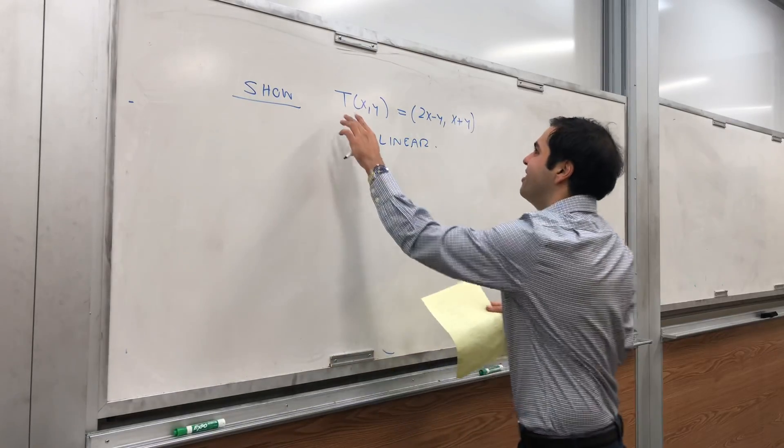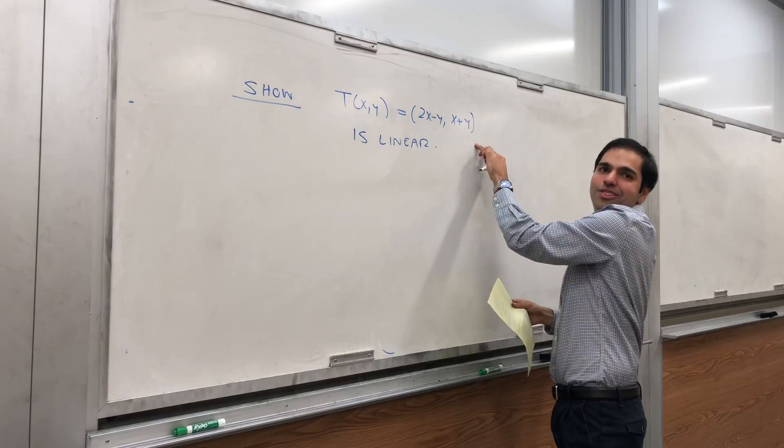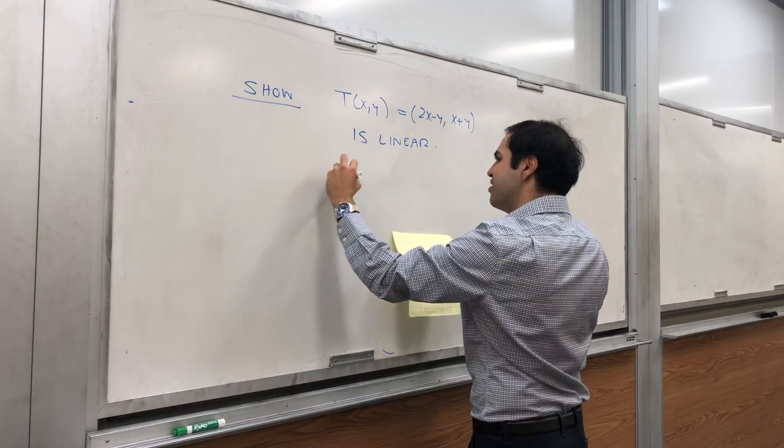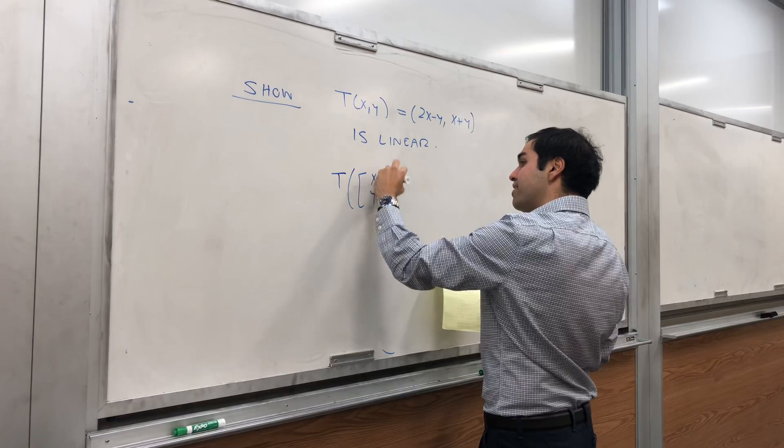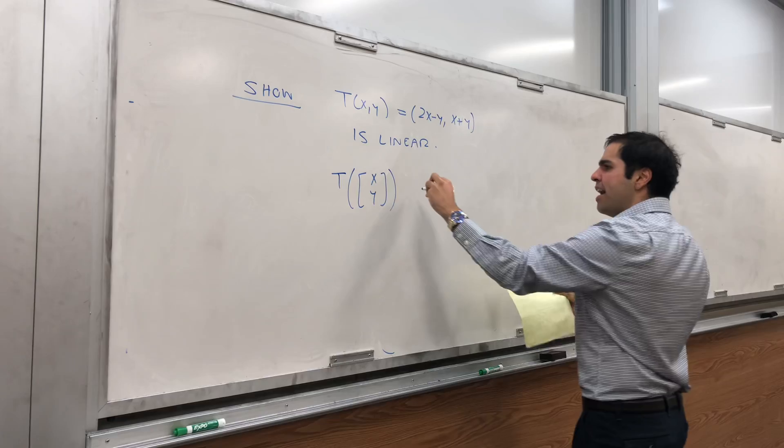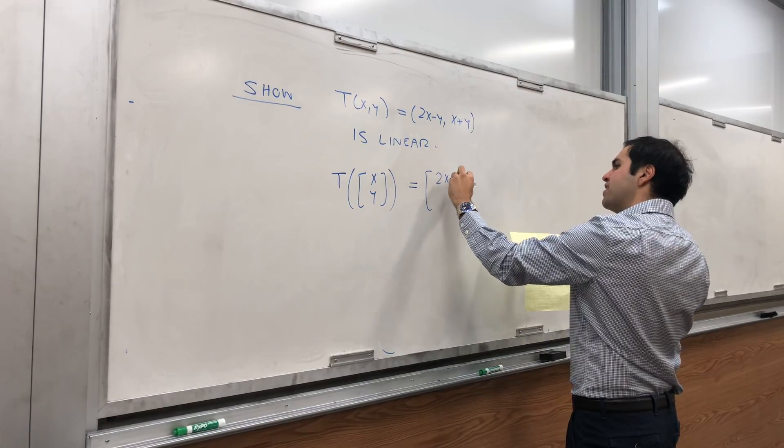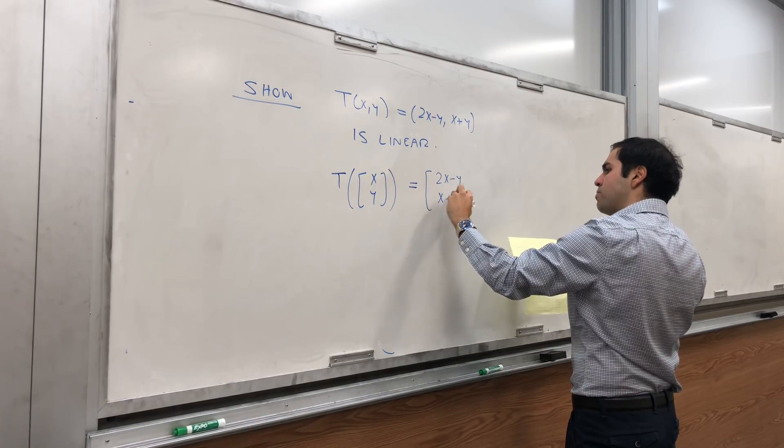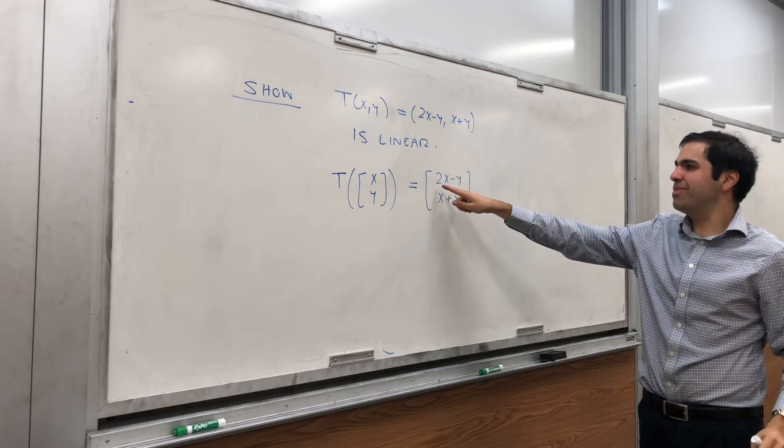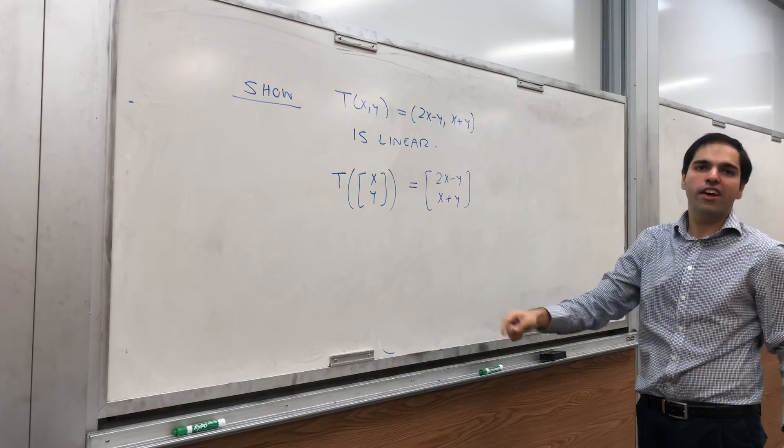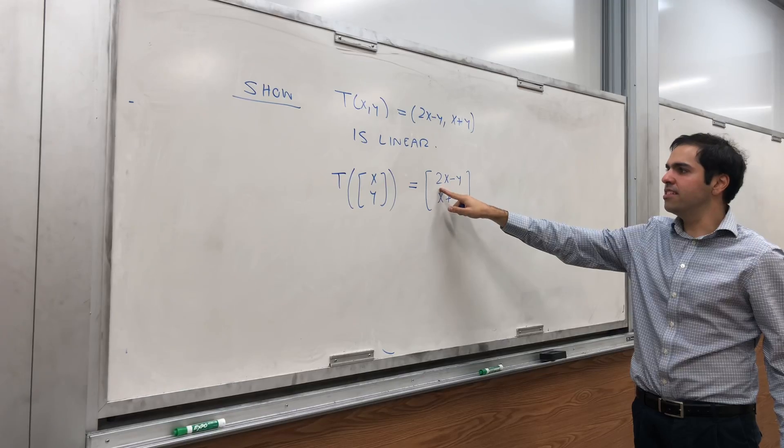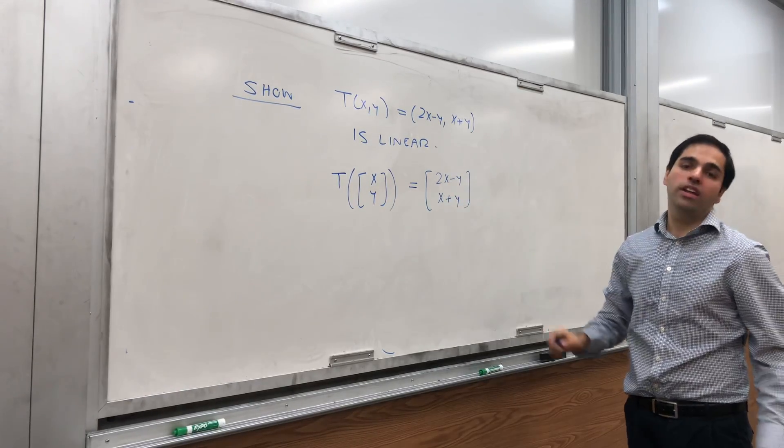So first of all, I know lots of people like this notation. Let me show you a different kind of notation that's maybe neater. Namely, think of it in terms of vectors. T takes the vector (x, y) as input and spits out the vector (2x minus y, x plus y). The reason I like this notation is because with this notation it's easier to figure out the matrix of T, at least with respect to the standard basis, which would be [2, -1; 1, 1].